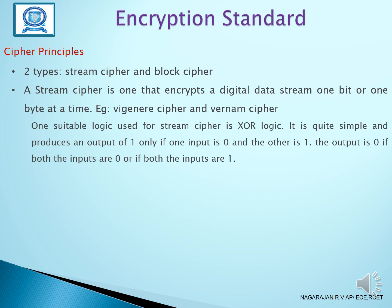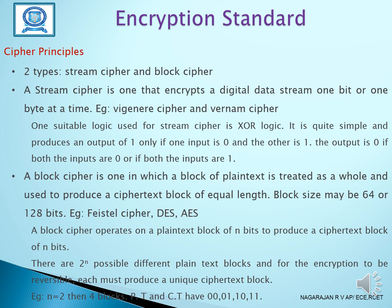The output is zero if both the inputs are zeros or if both the inputs are one. Another cipher is the Block Cipher. The Block Cipher is one in which a block of plain text is treated as a whole and used to produce a cipher text block of equal length. The block size may be 64 or 128 bits. An example is the Feistel Cipher, in which we can use Data Encryption Standard and also Advanced Encryption Standard. A Block Cipher operates on a plain text block of n bits to produce a cipher text block of n bits.